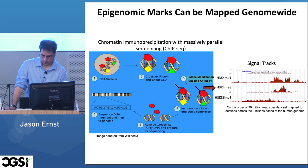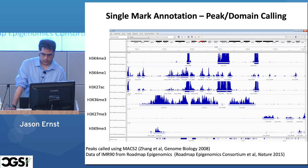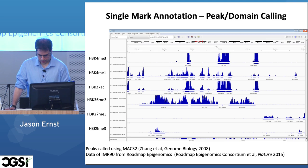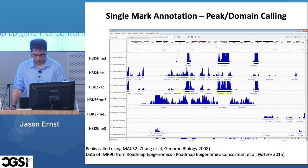One thing you might do with this data is to call peaks. This is something Jessica Lee talked about — a popular program called MACS or MACS2, used for peak calling for both histone modifications and transcription factor binding. The method looks for places where you have significantly more reads than expected. One complication with histone modifications is the broader domains, where it's often ill-defined whether you have one broad domain or two subdomains. But in either case, you're treating each mark individually.